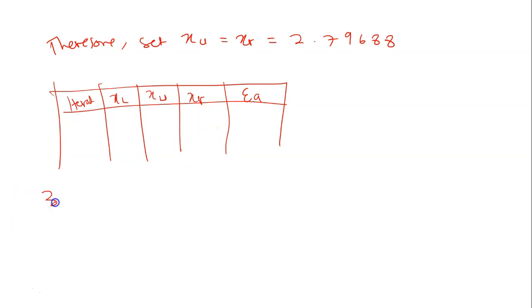So I'm going to provide the answer for third iteration. So for third iteration the answer is ea you should get around 1.77%. Your x_r is 2.74805.